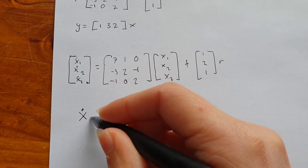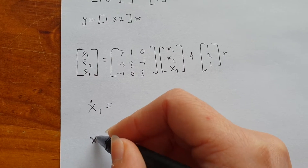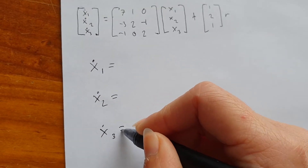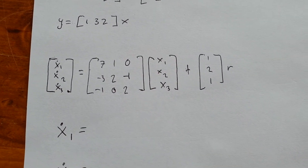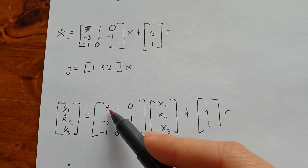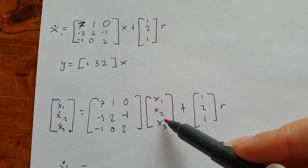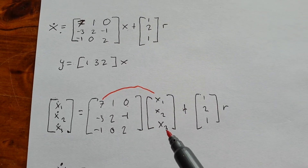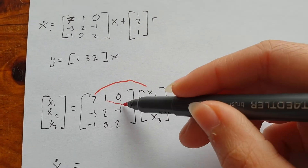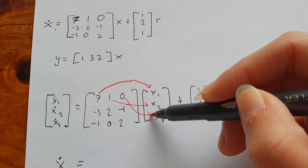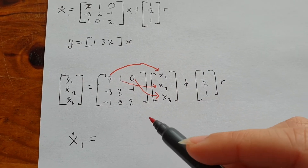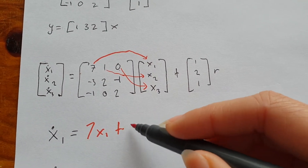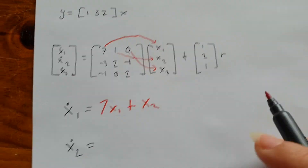So let's write down our equations: x_dot1 equals, x_dot2 equals, and x_dot3 equals. For x_dot1, it's this top row times our column of x's. That gives us 7 times x1, 1 times x2, and 0 times x3 — so we get 7x1 plus x2, and we don't need to write the 0x3 term.